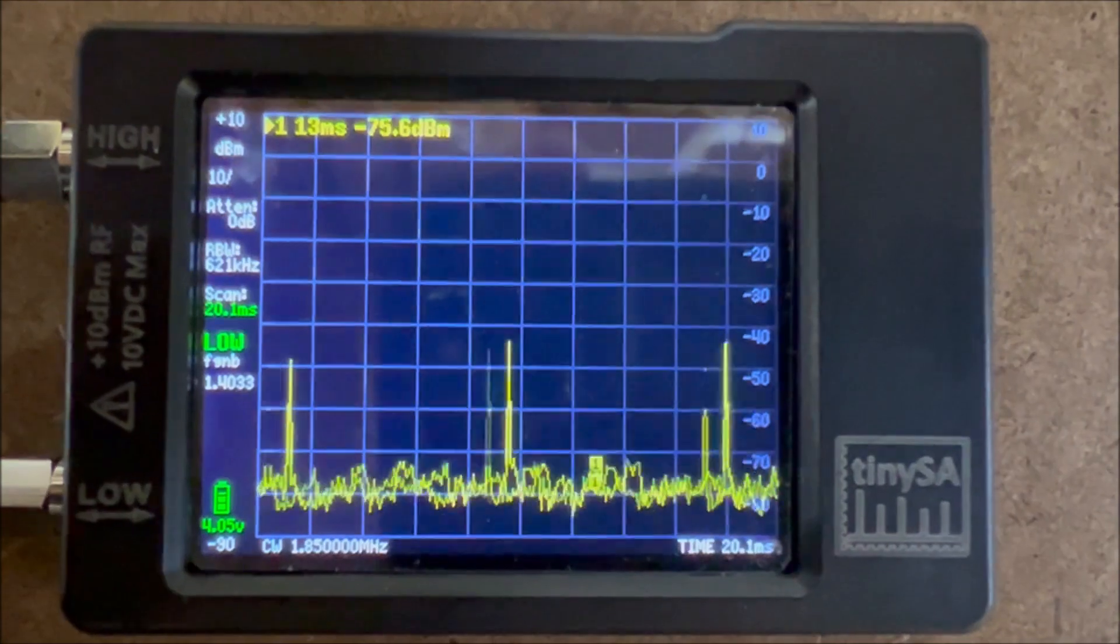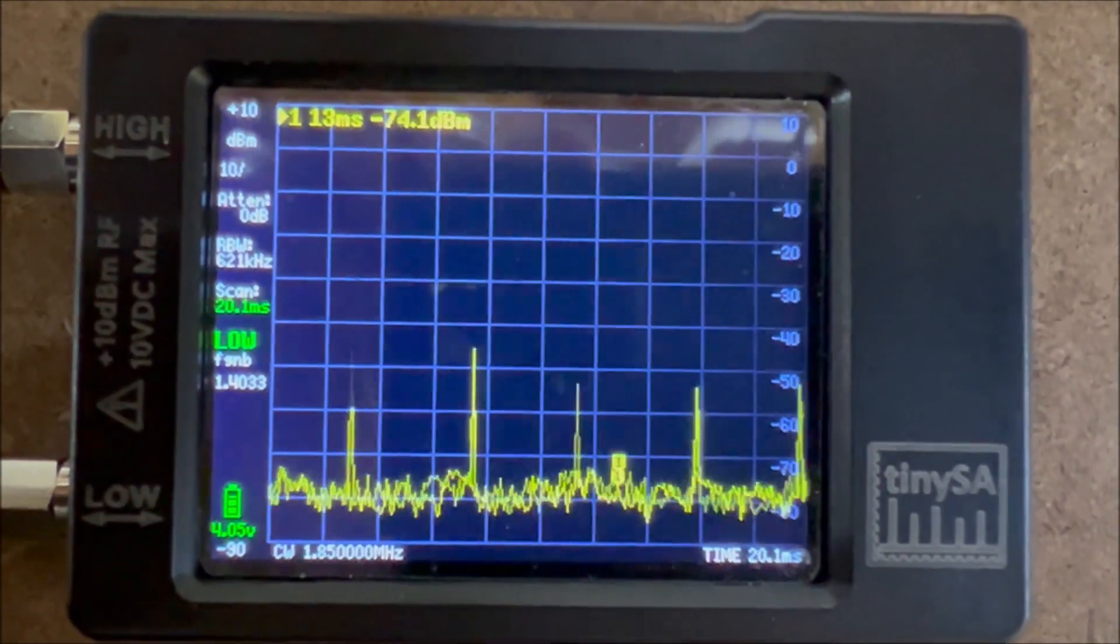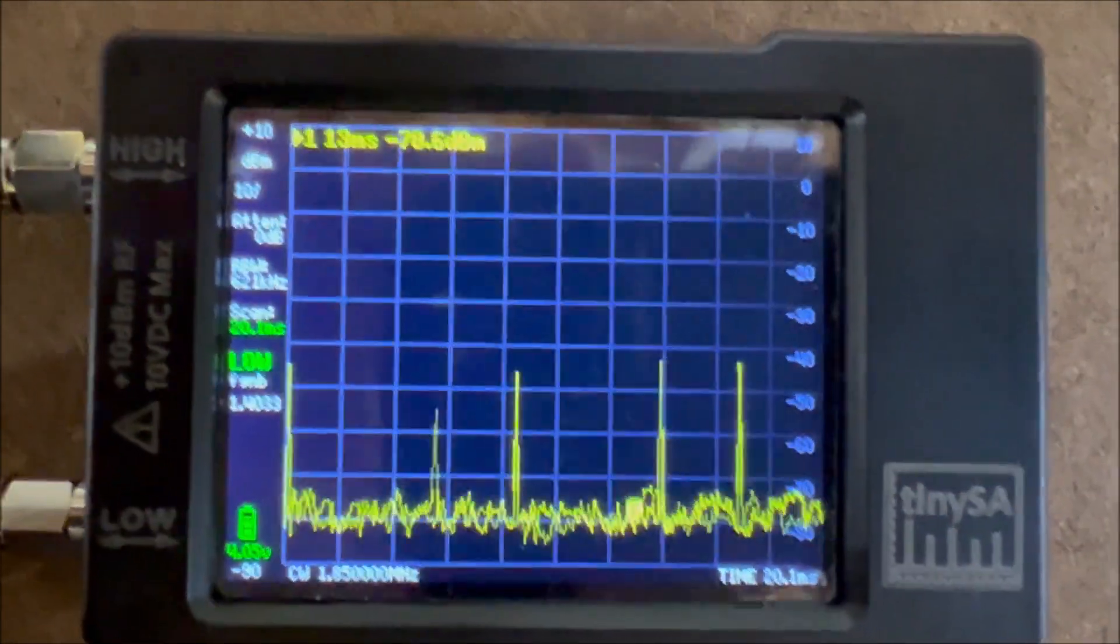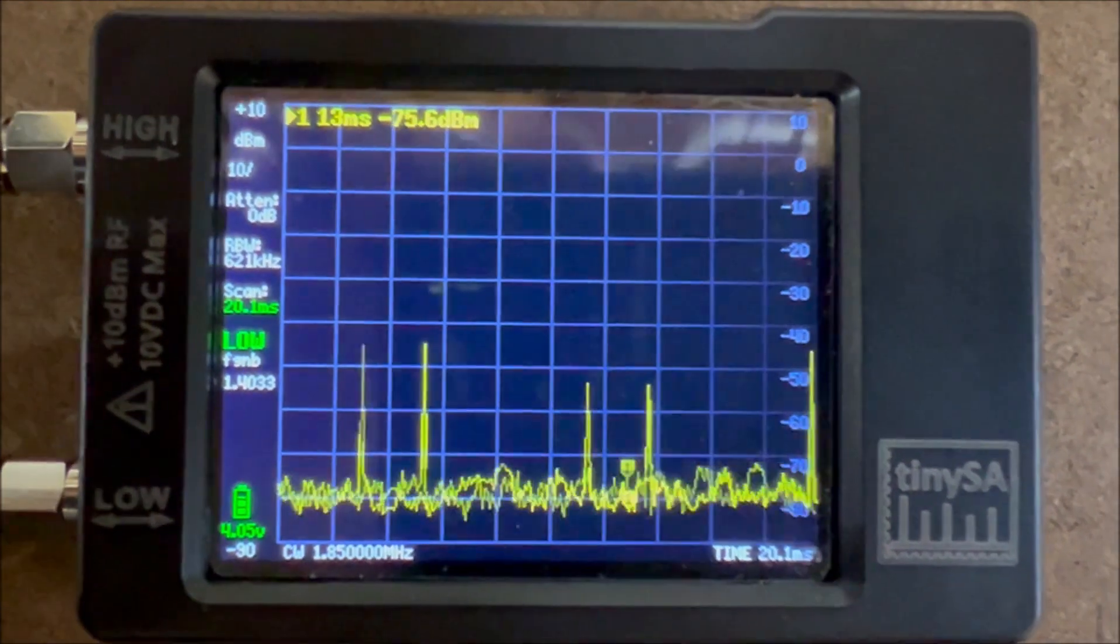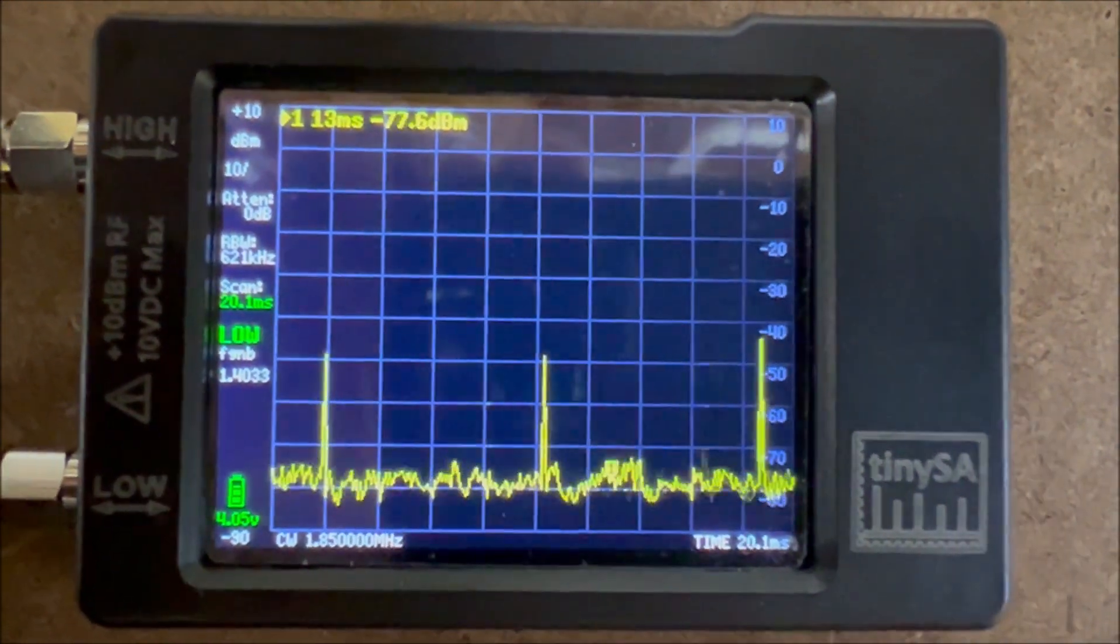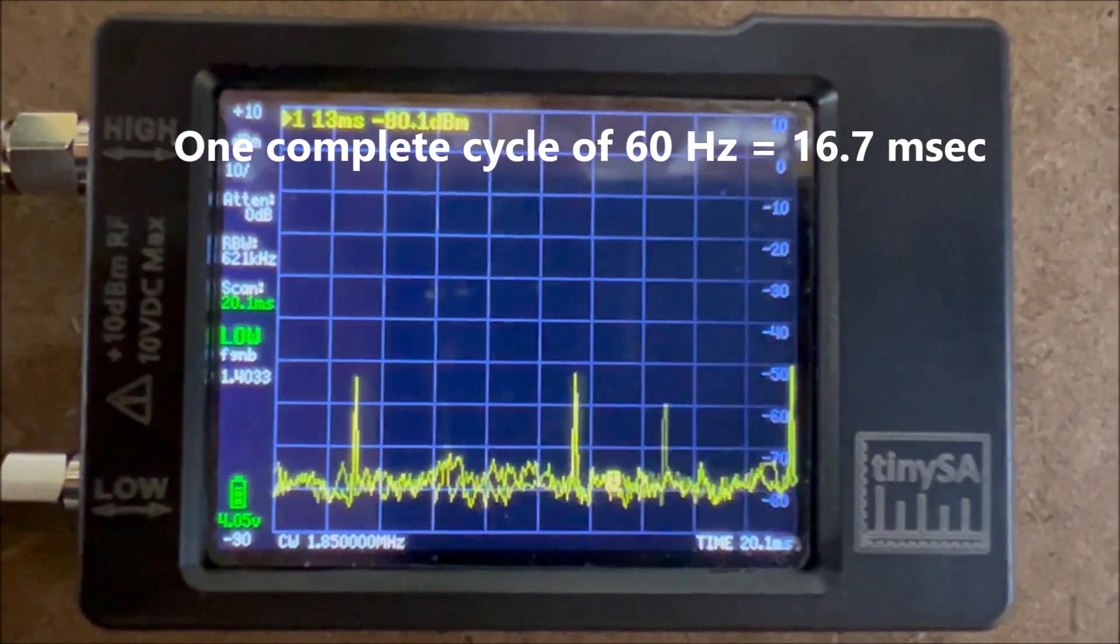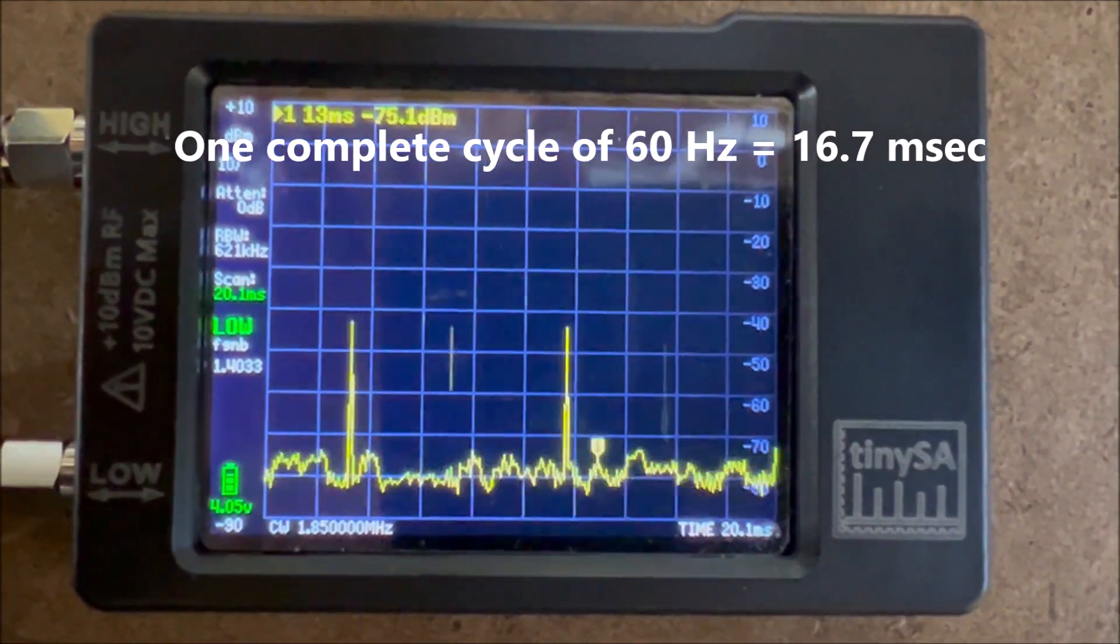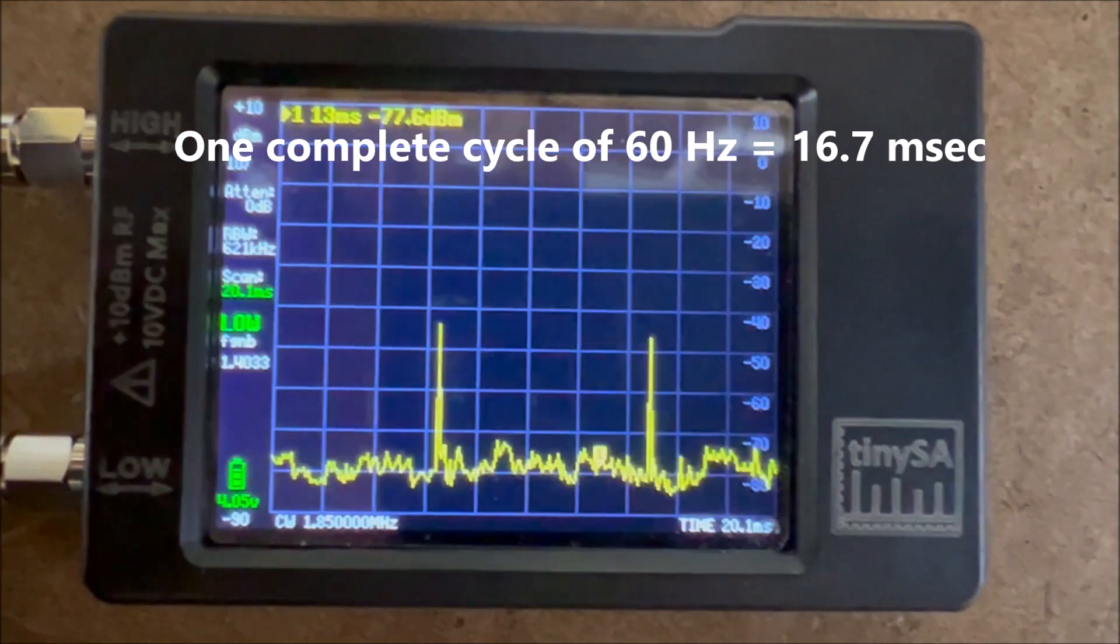Zero span mode really puts the TinySA into the time domain mode, where the horizontal axis is actually displaying a swept time I've got set for 20 milliseconds to represent slightly more than the time for a 60 Hz sine wave.